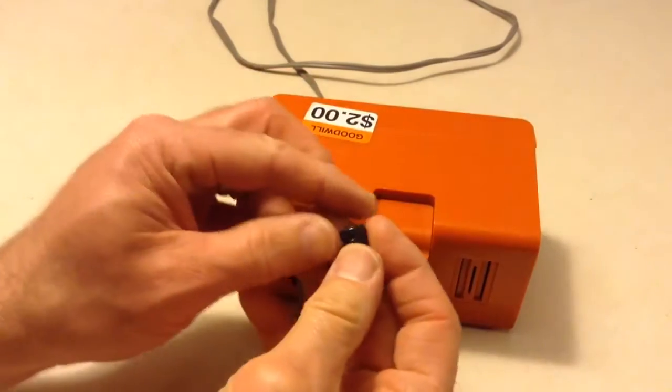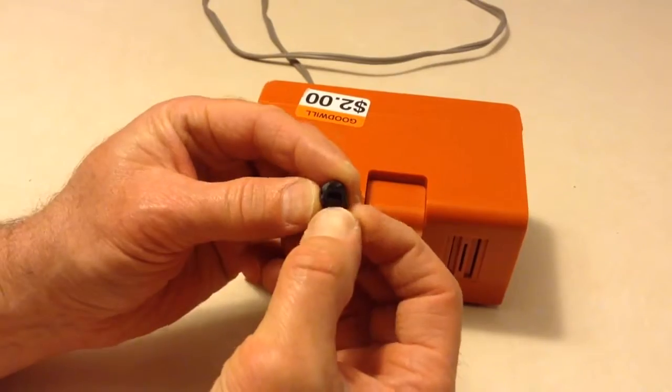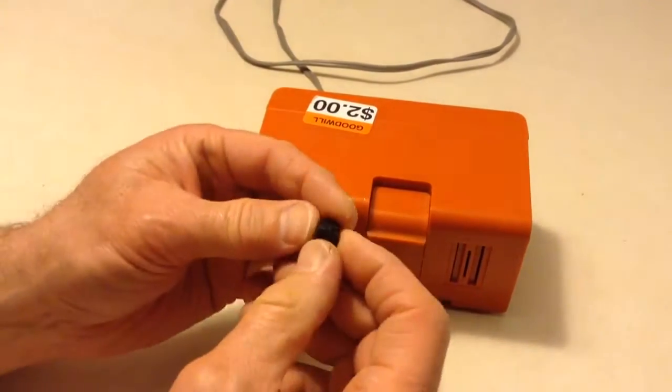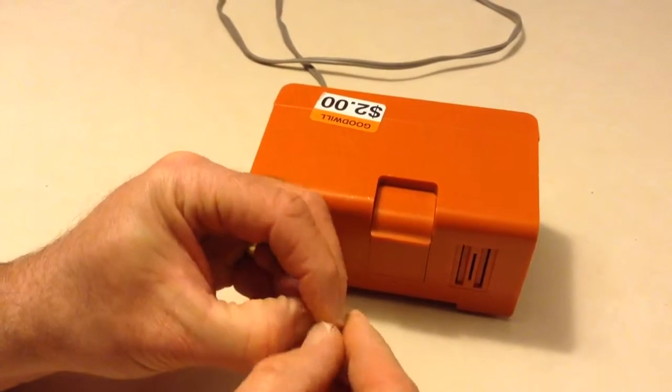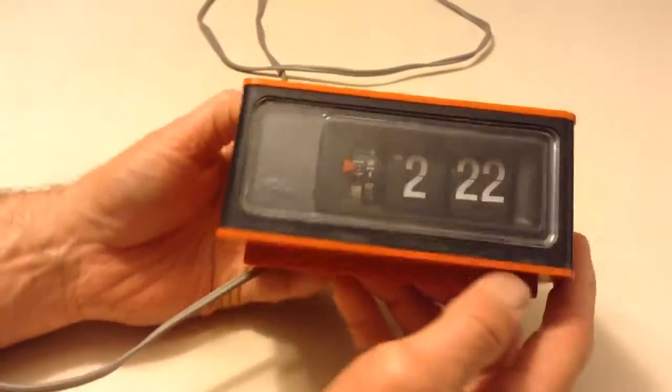Well in fact what you do is you go ahead and you push in this little tab and then pry it out. And then it will come free fairly quickly and that will allow you to get the clock out. So really the only thing left now is how do you get this face off.